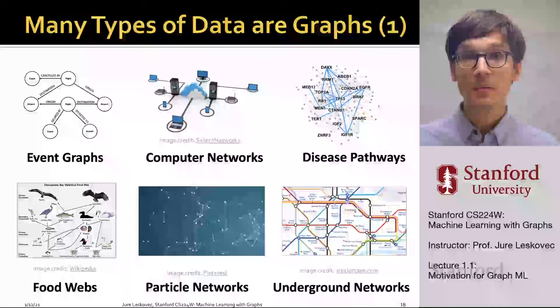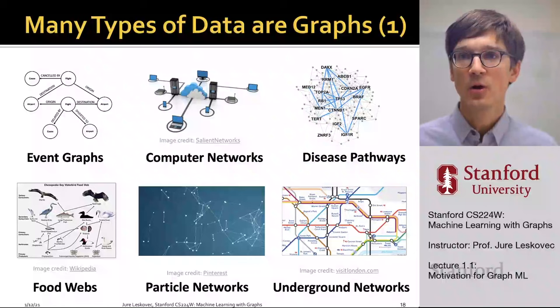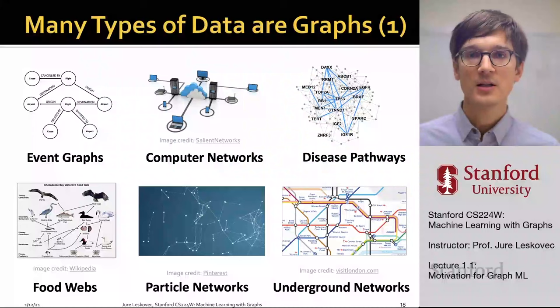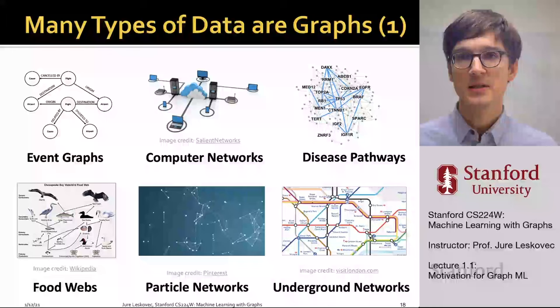There are many types of data that can naturally be represented as graphs, and modeling this relational structure of the underlying domain allows us to build much more faithful, much more accurate models of the underlying phenomena. For example, we can think of computer networks, disease pathways, networks of particles in physics, networks of organisms in food webs, infrastructure, as well as events — all can be represented as graphs.